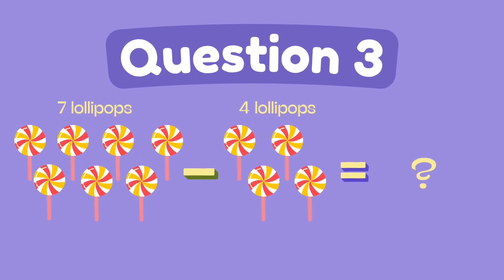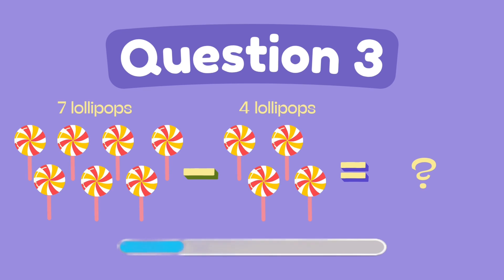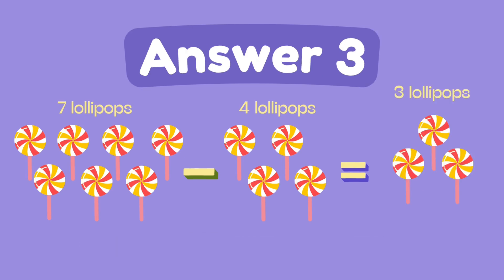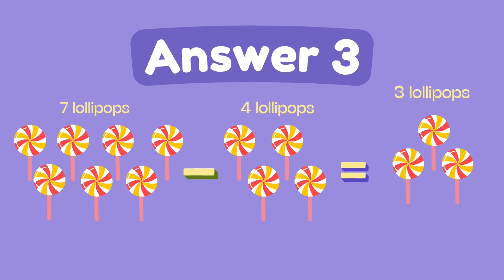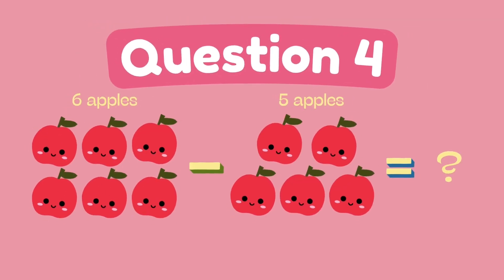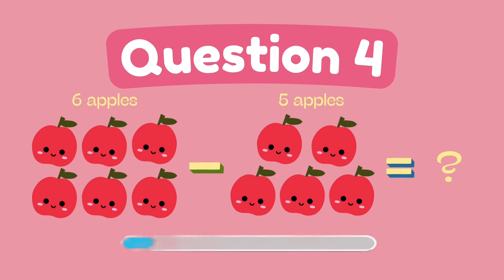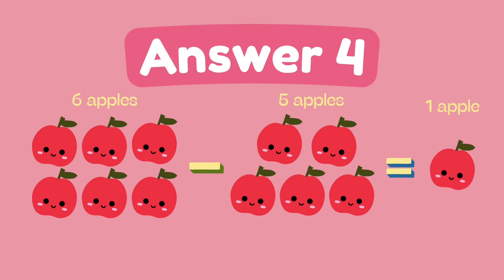What is 7 minus 4? The answer is 3. What is 6 minus 5? The answer is 1.